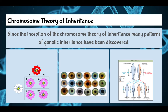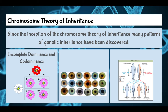Since the inception of this theory, many patterns of inheritance have been discovered. The first are incomplete dominance and codominance. This results in a kind of in-between view of an organism — so instead of red flowers or white flowers, we get pink flowers. Instead of a black cat and a white cat, we get a spotted cat.